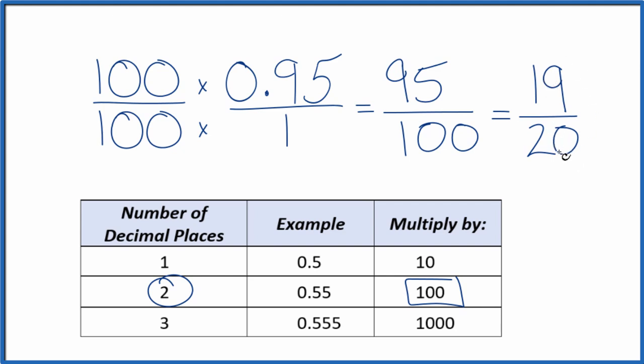We can't reduce this any further. If you divide 19 by 20 or 95 by 100, you're going to get the decimal 0.95. This is Dr. B. Thanks for watching.